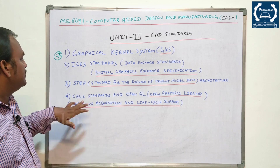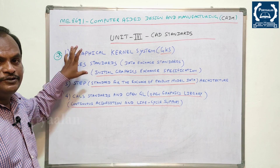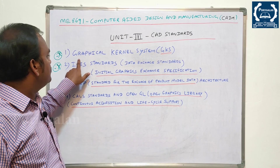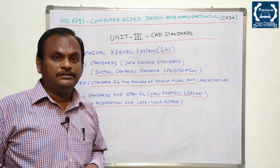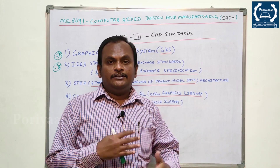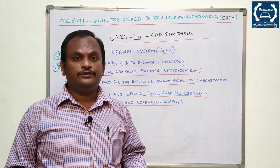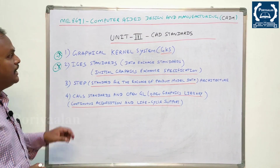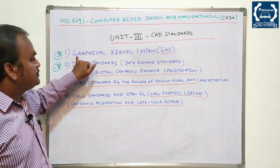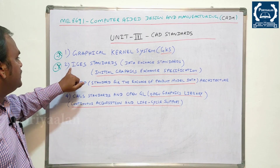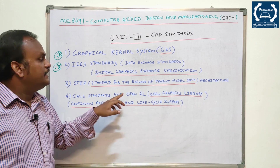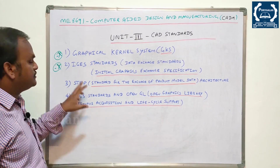The four CAD standards are: GKS (Graphical Kernel System), IGES (Initial Graphics Exchange Specification), STEP (Standard for the Exchange of Product Model Data), and CALS. Questions 1 and 2 — GKS and IGES — are very important repeated questions. GKS has an architecture diagram showing its working principle. After design, we save and exchange data — that is the CAD standard purpose.